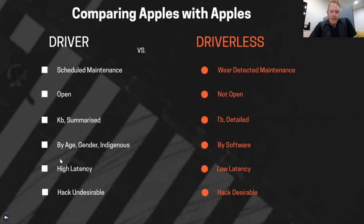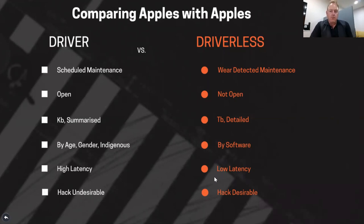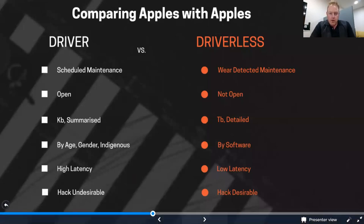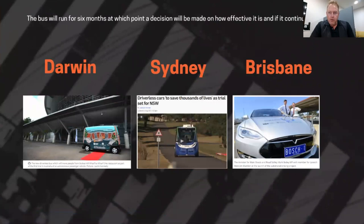Driver data has a high latency — road accidents might appear on an open data website perhaps a year after the accident has happened. Driverless car data has a very low latency — it happens in real time. Driverless car data is probably more desirable for a hacker to fiddle with the records or systems on board a driverless car versus actually hacking an open data site. There are quite a few differences, and when we talk about whether driverless cars are safer, there are a few other issues you need to consider.